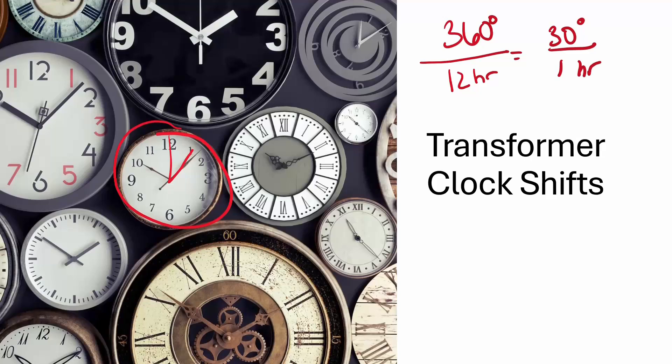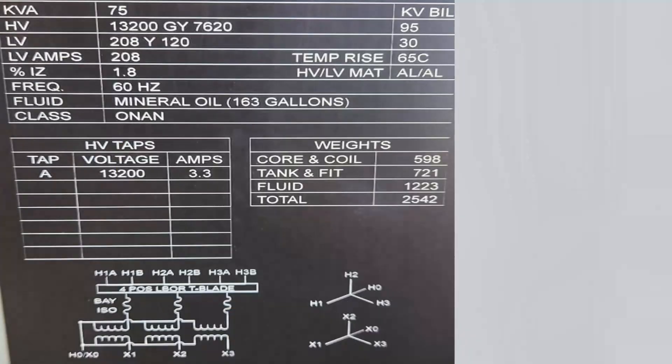And so that's why they're called transformer clock shifts, because we're talking about 30 degrees in the positive or the negative direction. So let's go ahead and take a look at some examples.